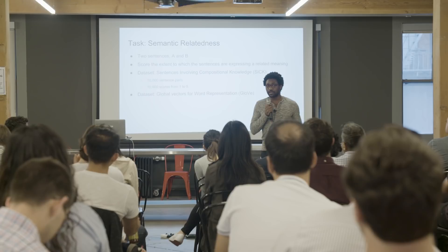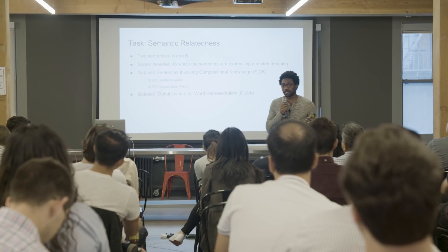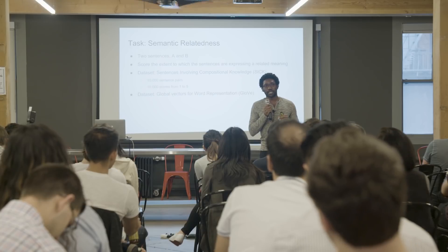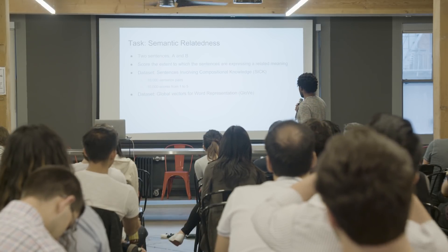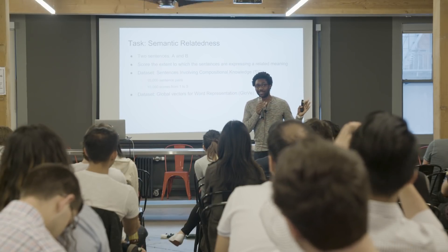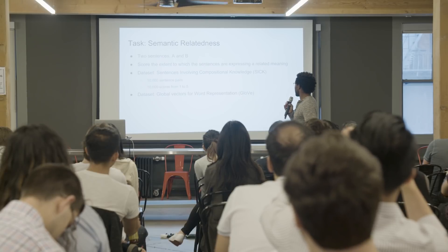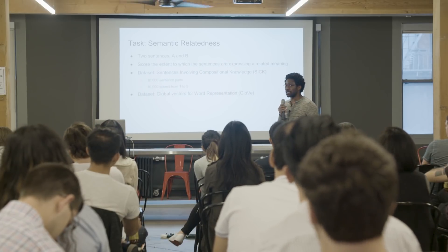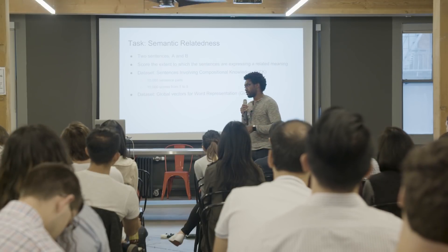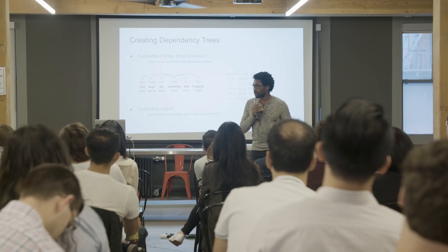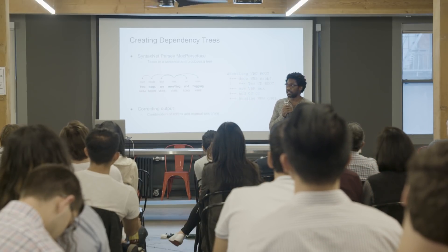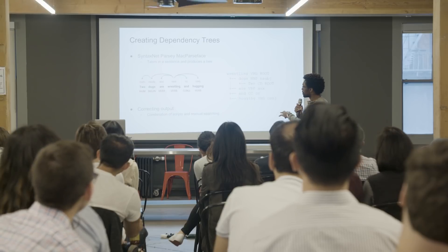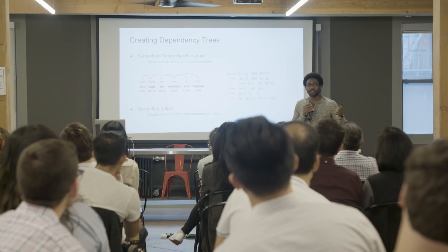The task I chose for this investigation was semantic relatedness. You get two sentences, just like in the quiz, and you have to come up with a score for how similar in meaning the sentences are. I used a dataset called SICK — no idea who came up with that name — which has 10,000 pairs of sentences and 10,000 scores. I also used GloVe, which is an embedding for words. To convert my sentences from the SICK dataset into trees, I used SyntaxNet, which is well known for parsing. The output sometimes makes mistakes, so you have to manually correct it.